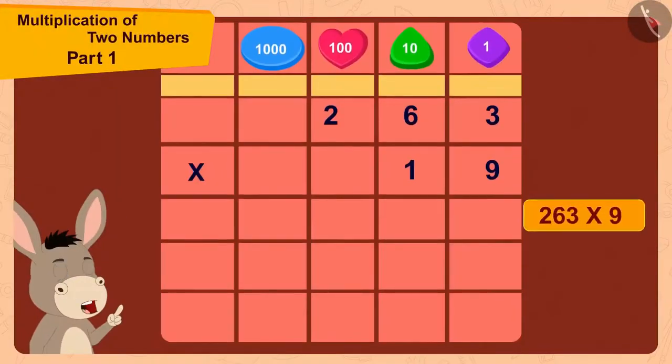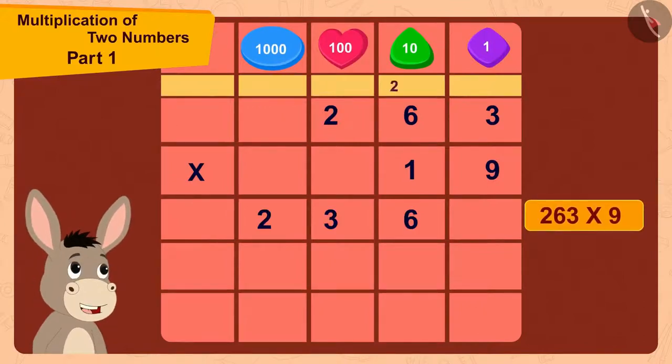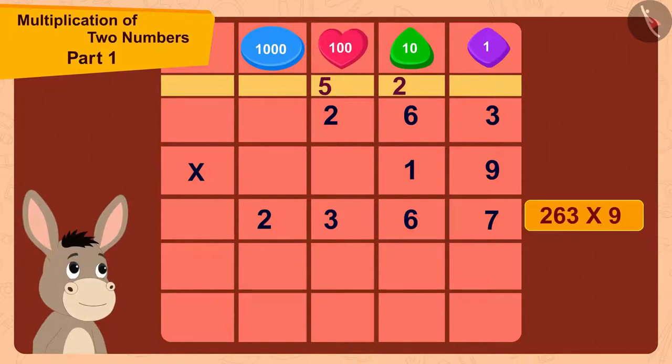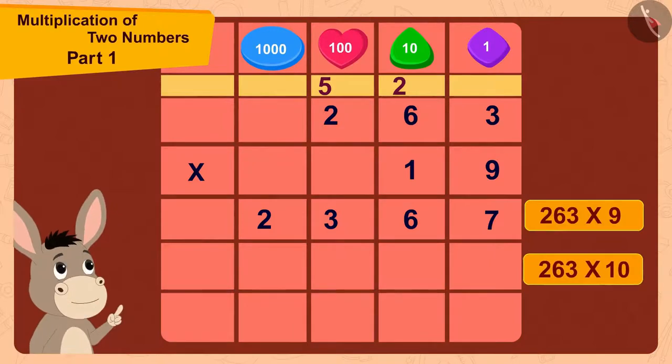9 times 263 is 2367. Now, to multiply 263 with 10, first I will write a 0 here.